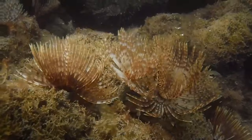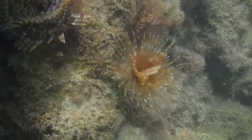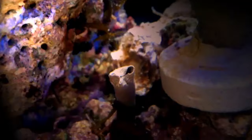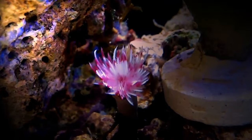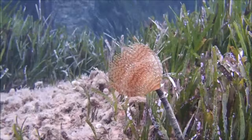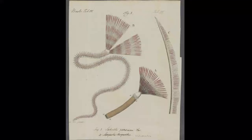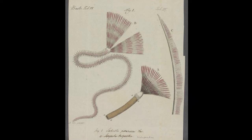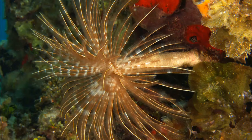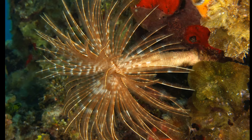Feather duster worms are a family of filter feeding tube worms that live stationary lives. They can inhabit shallow or deep waters. They are named for their highly branched fan of tentacles that extends from their tube. These tentacles are used for extracting oxygen from the water and filter feeding. The rest of their body is segmented and hidden in their soft, flexible tube.